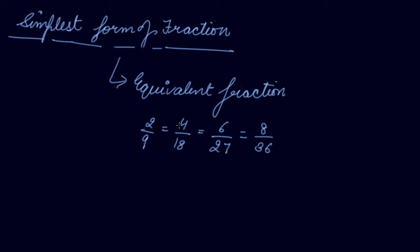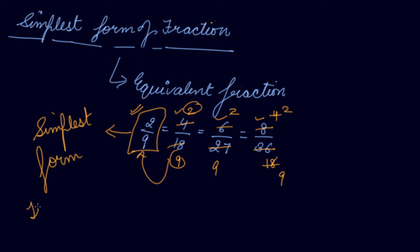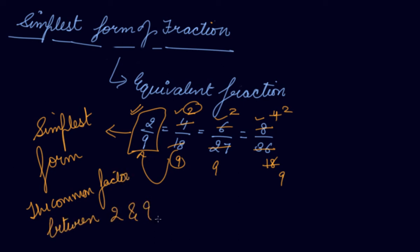When we cancel 4 by 18, we get 2 and 9. If we cancel 6 by 27, the common factor is 3, so we get 2 and 9. For 8 by 36, we can divide by 2 to get 4 by 18, then again by 2 to get 2 and 9. So solving all these equivalent fractions, we get 2 by 9, which is the simplest form. This means the common factor between 2 and 9 is 1 — that is, 2 and 9 are co-prime numbers.